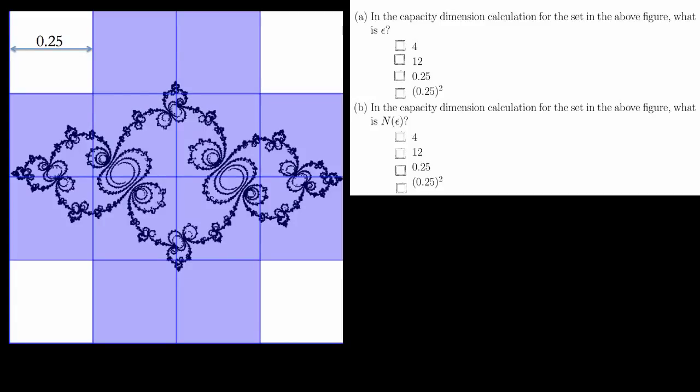For question one, we want to consider the following figure. For part A, in the capacity dimension calculation for the set in the figure, what is epsilon? Epsilon, in the capacity dimension calculation, is the side length of each box. As labeled here, each box is 0.25 wide, so the answer is 0.25.